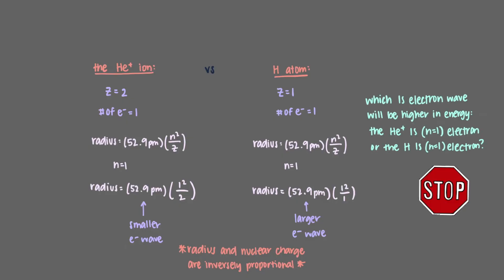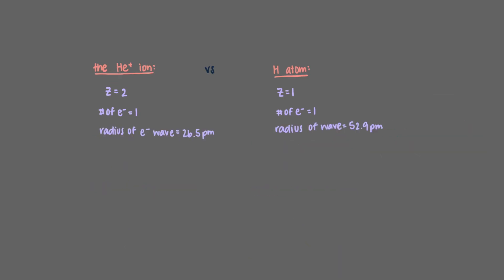Which 1s electron wave will be higher in energy? The helium plus 1s electron or the hydrogen 1s electron? Now let's look at the other Bohr model equation. Again, these two electron waves are n equals 1 since both of them are 1s, so the n variable is the same. The helium ion's nuclear charge is 2, and hydrogen's nuclear charge is 1.